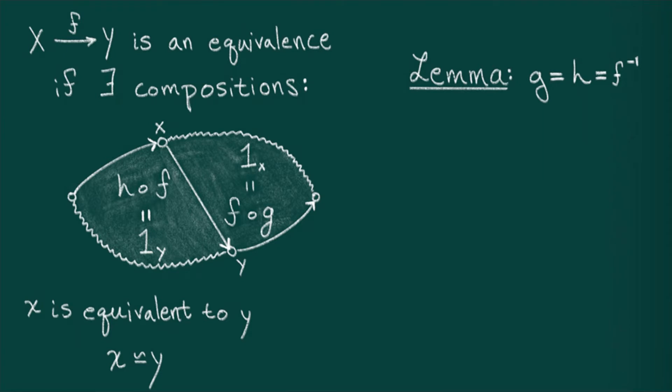So here's the proof. First, recall that every map factors through the identity, so that h is equal to h composed with the identity. Next, by assumption, I said that the identity factors as a composition of f and g.